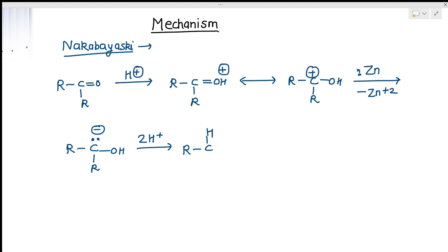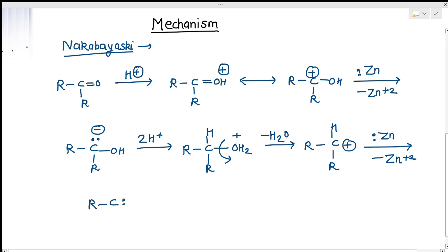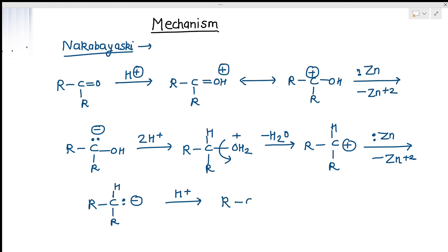After protonation we get an OH2 group, which is eliminated as water, giving R-CH-R with a positive charge. This carbenoid intermediate again takes electrons from the zinc metal, converting it to Zn²⁺, giving R-CH⁻-R. This reacts with H⁺ and is converted to the final hydrocarbon R-CH2-R.